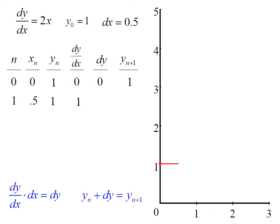We find dy/dx again by putting 0.5 in for x. So dy is 0.5, and y sub n plus 1 is 1.5. So after two iterations, we are at 1, 1.5.